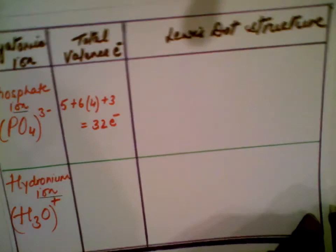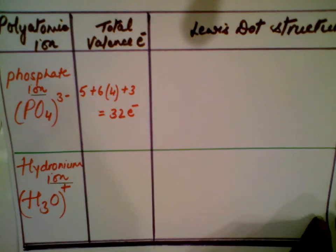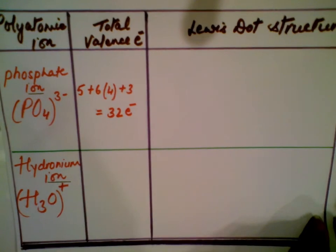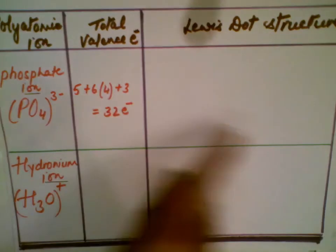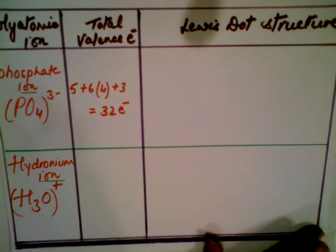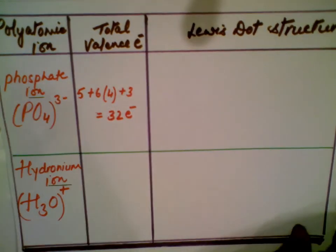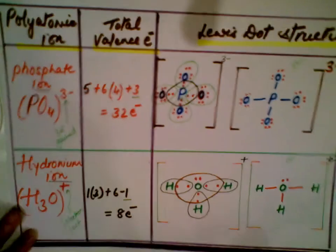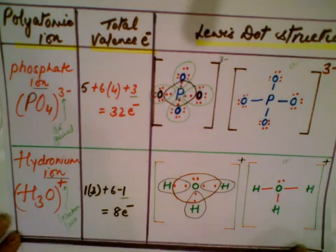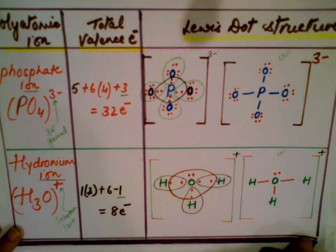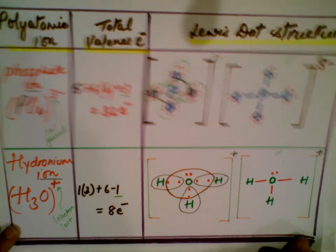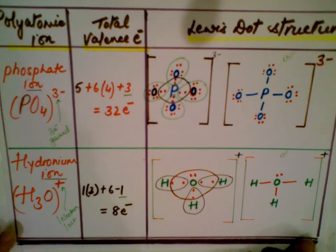Now it's your turn. Pause the video and try it yourself — you have two polyatomic ions to practice. Find the total number of valence electrons and draw the Lewis dot structure. Great work, thank you!